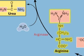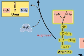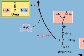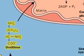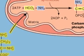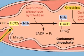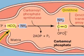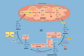Urea is hydrolyzed from arginine by arginase and excreted, leaving ornithine. When ornithine moves from the cytosol to the mitochondrial matrix, the cycle can repeat, converting more ammonia and bicarbonate to urea.